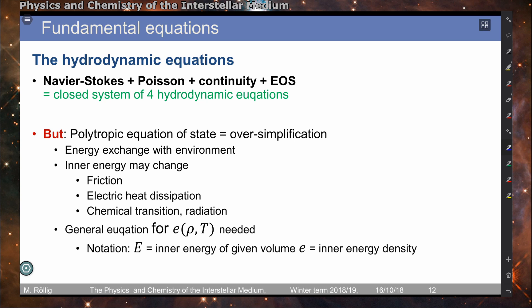We now have a closed system of four hydrodynamic equations: the Navier-Stokes equation, the Poisson equation, the continuity equation, and the equation of state. This system is closed and can be solved, but if we want to apply it to the interstellar medium, we find that the equation of state is a bad description, because the polytropic equation of state is a strong oversimplification of the true interstellar medium.